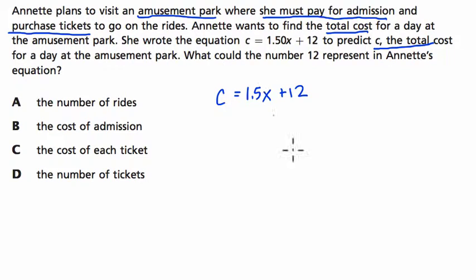And they want to know what could the number 12 represent in Annette's equation. Well, I'm thinking here that since it's $1.50 times X, or $1.50 per X, that's the cost of a ticket. Right? Every ticket is $1.50. So I'm thinking X is the number of tickets. They told us that C is the total cost.